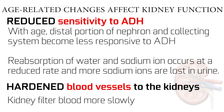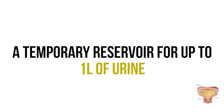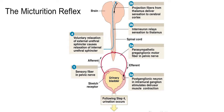Blood vessels supplying the kidney can become hardened, causing the kidney to filter blood more slowly. The urinary bladder functions as a temporary reservoir for urine storage, and a full bladder can contain 1 liter of urine. As the bladder fills with urine, stretch receptors in the urinary bladder stimulate sensory fibres in the pelvic nerve. The stimulus travels from afferent fibres in the pelvic nerve to the sacral spinal cord, where afferent fibres stimulate ganglionic neurons in the wall of the bladder.